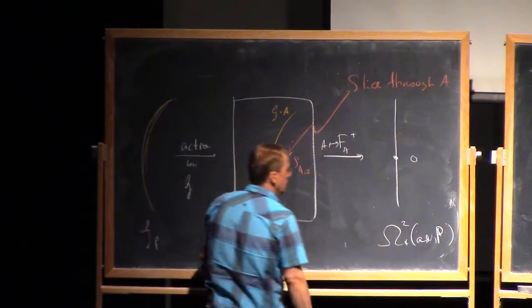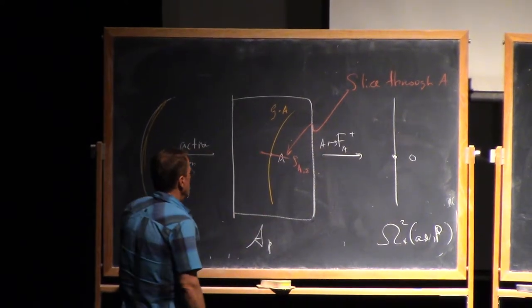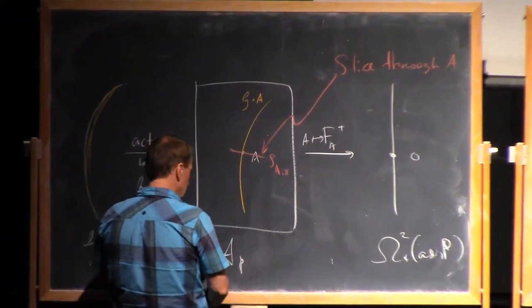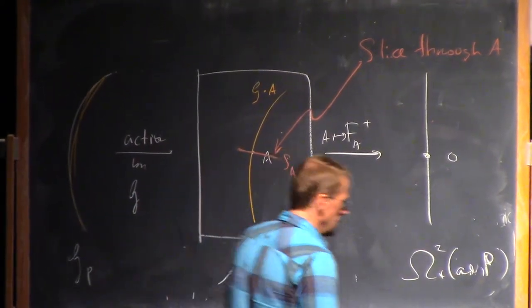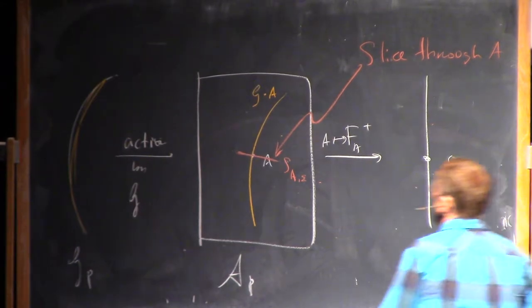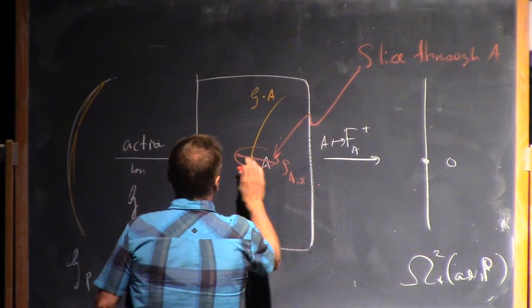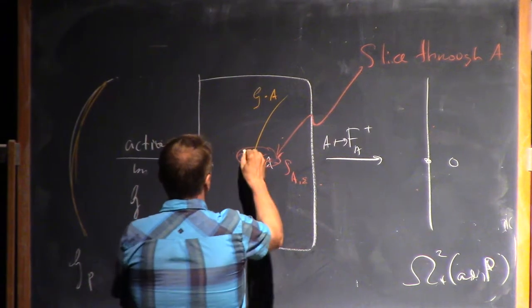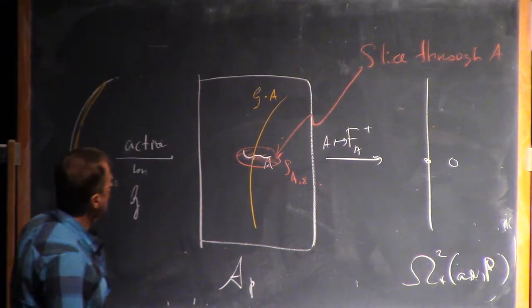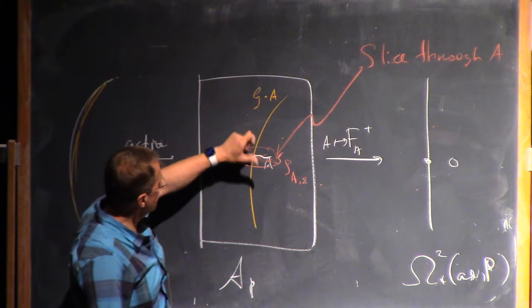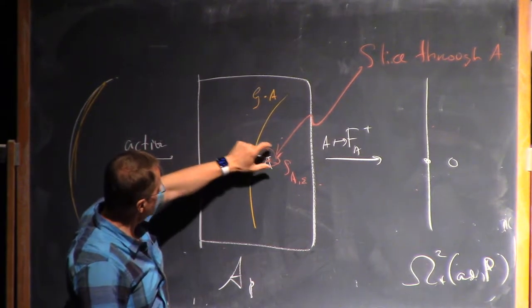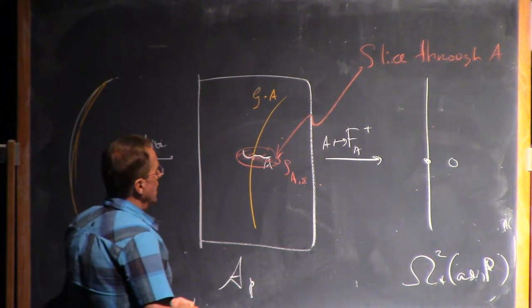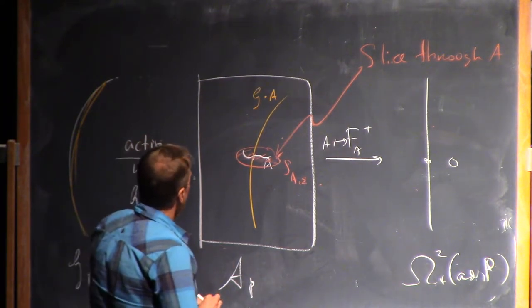There's zero, here's lambda plus. So inside this slice, maybe the slice has acquired some dimension now. Inside the slice, there's a local model for what the anti-self-dual connections look like modulo gauge.